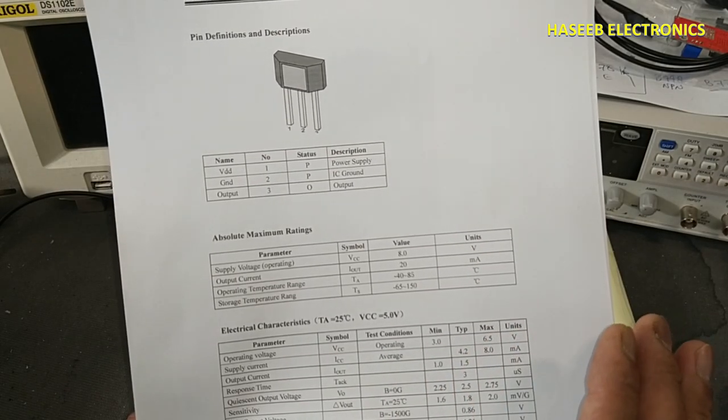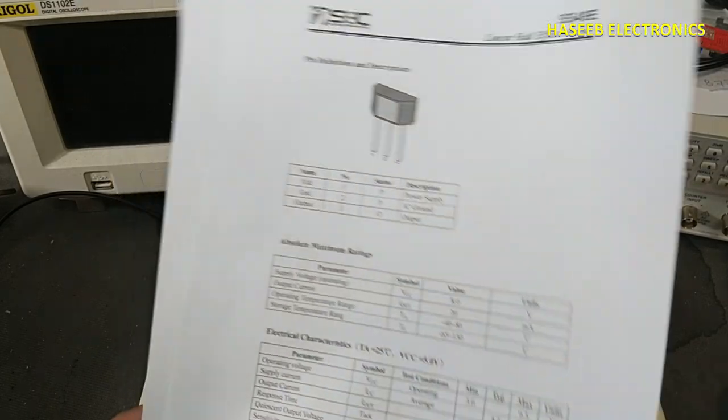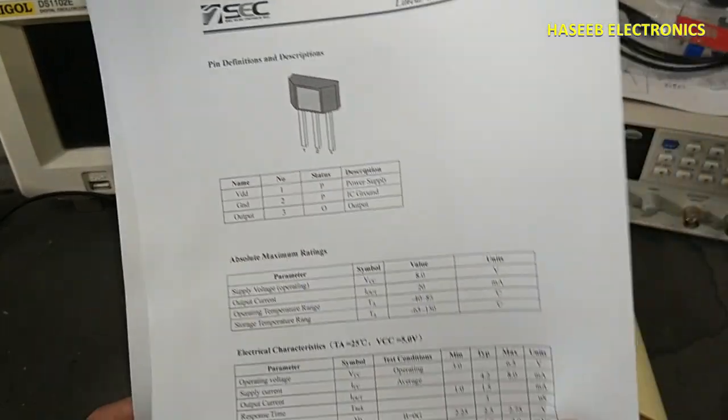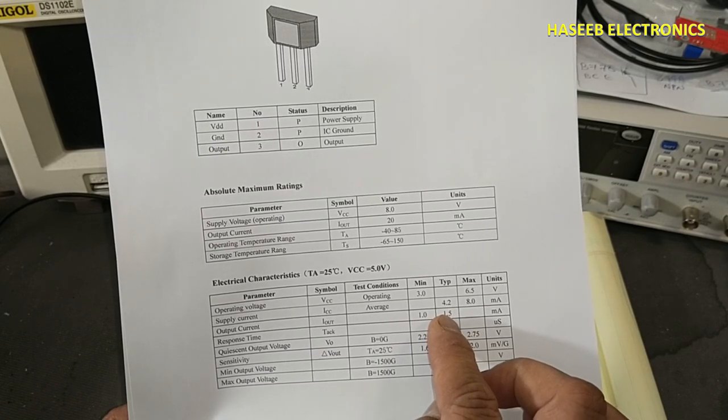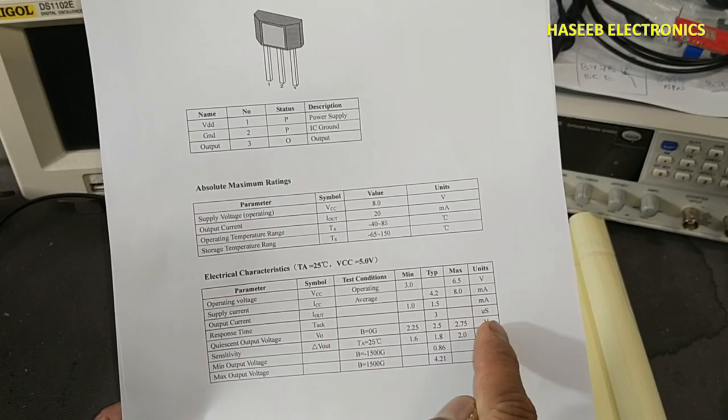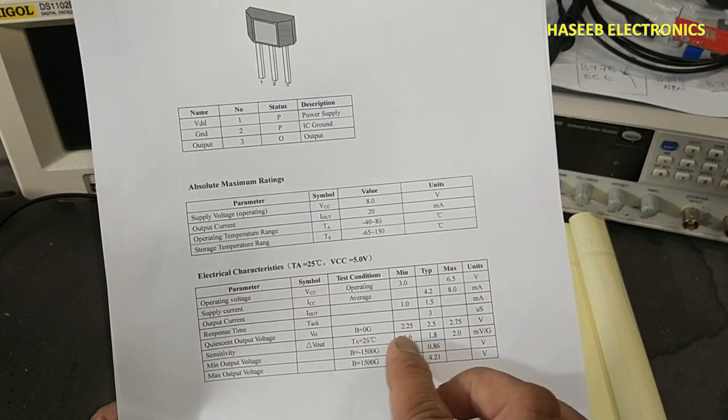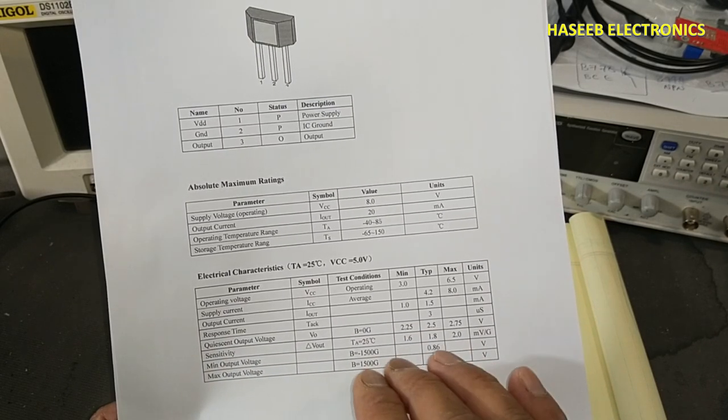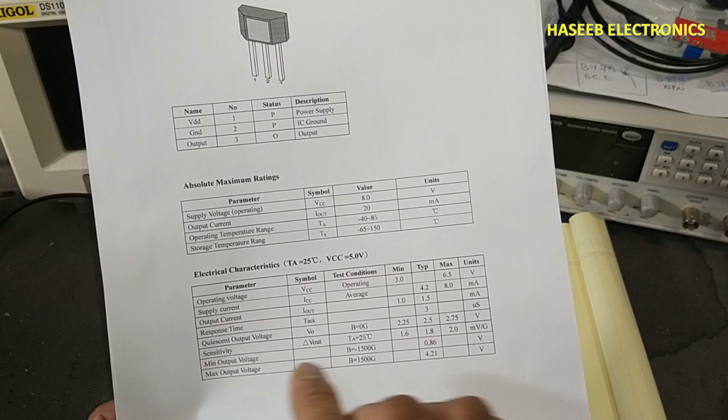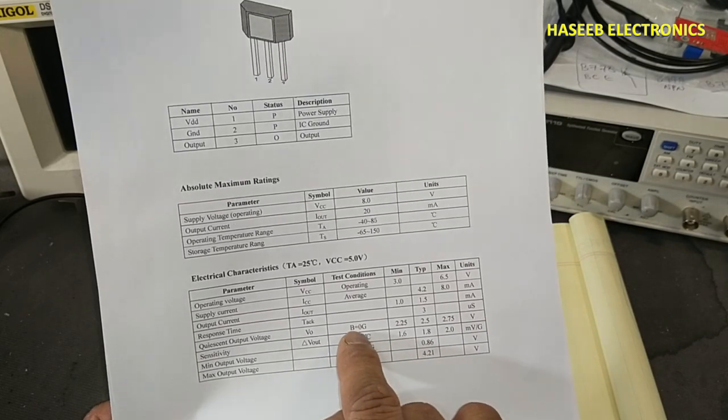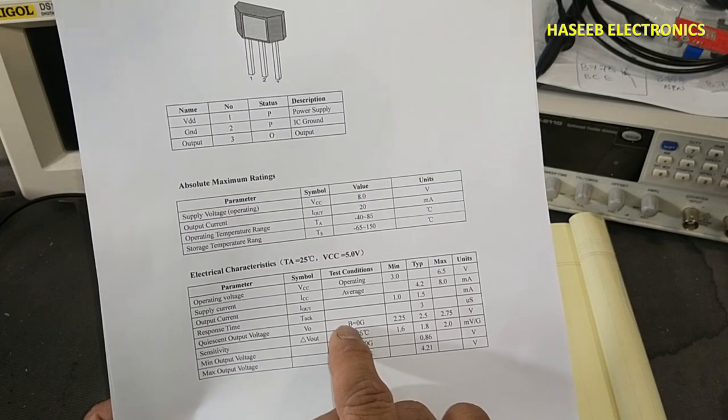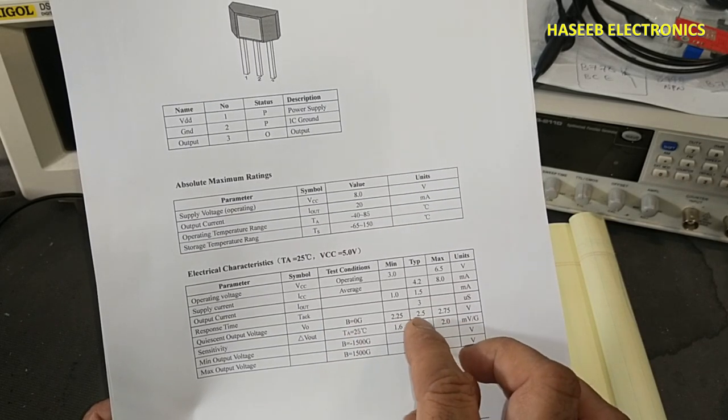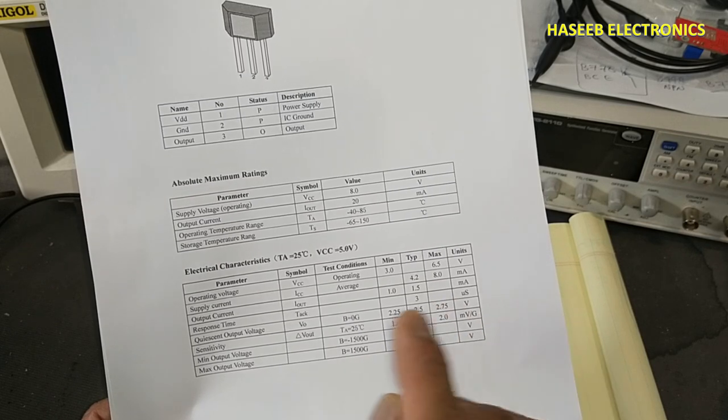Output current 1.5 milliampere typical, response time 3 microseconds. Quiescent output voltage that is 2.5 volt mid-range if we apply 5 volt and there is no magnetic flux. B0G, B that is flux 0G zero gauss, that time the supply voltage will be 2.5 volt.